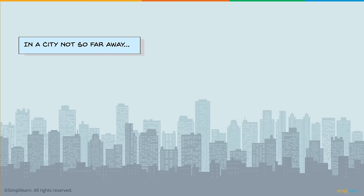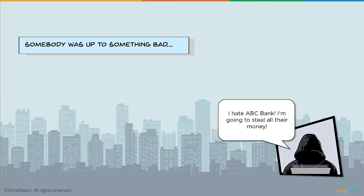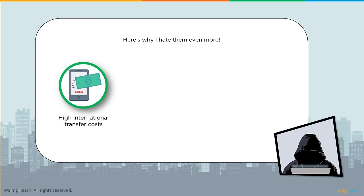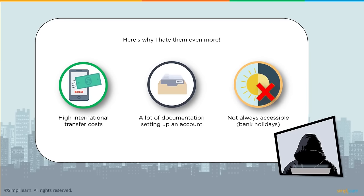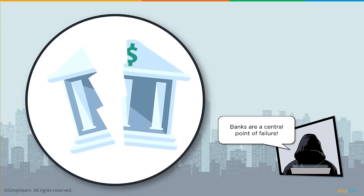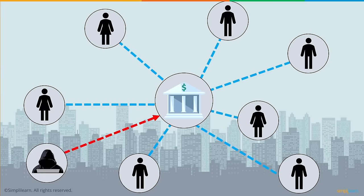Blockchain tutorial part one continues. In a city not so far away, a hacker who hates banks wants to steal people's money. The banking system has problems: higher transactional and international transfer costs, lots of documentation required for account setup, and it's not always accessible — closed on banking holidays with transfer limits. Banks in such an ecosystem act as a central point of failure. If the bank fails, all dependent transactions halt.